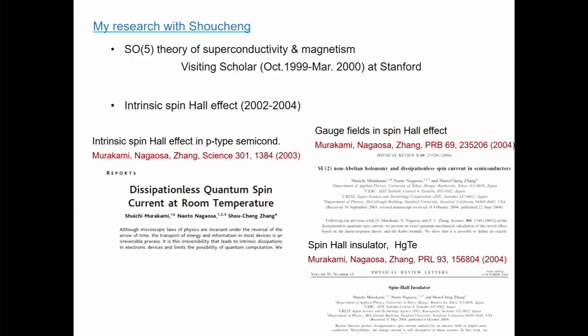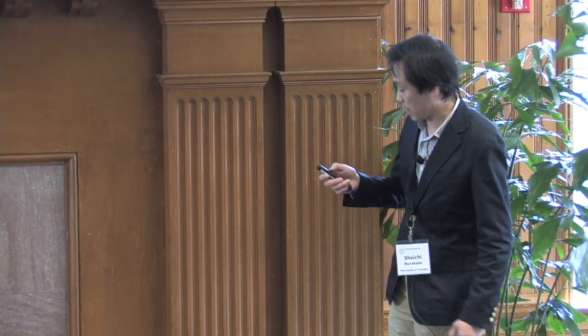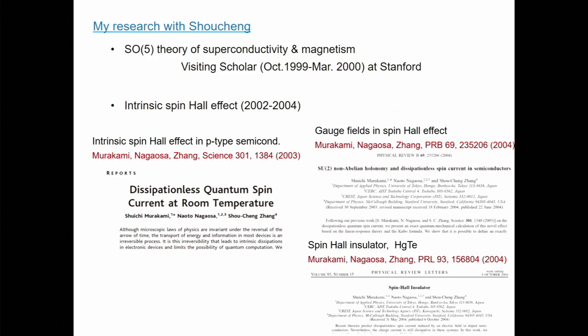Let me first introduce some of my research with Shu-Chan. My collaboration with Shu-Chan began with this SO5 theory of superconductivity and magnetism when I stayed in Stanford as a visiting scholar in the year 1999. At that time, I enjoyed discussion with Shu-Chan and also with many brilliant people like Chihon and Jampin and Andrei and Eugene and many others. After that, we happened to have a good chance to have a collaboration on intrinsic spin-Hall effect, and we wrote three papers in a row like this.